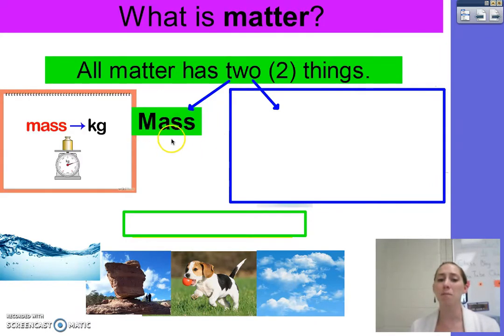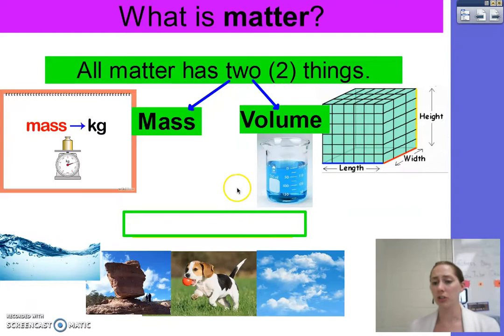The first property is it must have mass, and we measure mass in kilograms in the SI system. The other property it must have is volume. There are two types of volume. We have solid volumes, which is the length times width times height, measured in cubic meters, or we have liquid volumes, which is measured in liters.